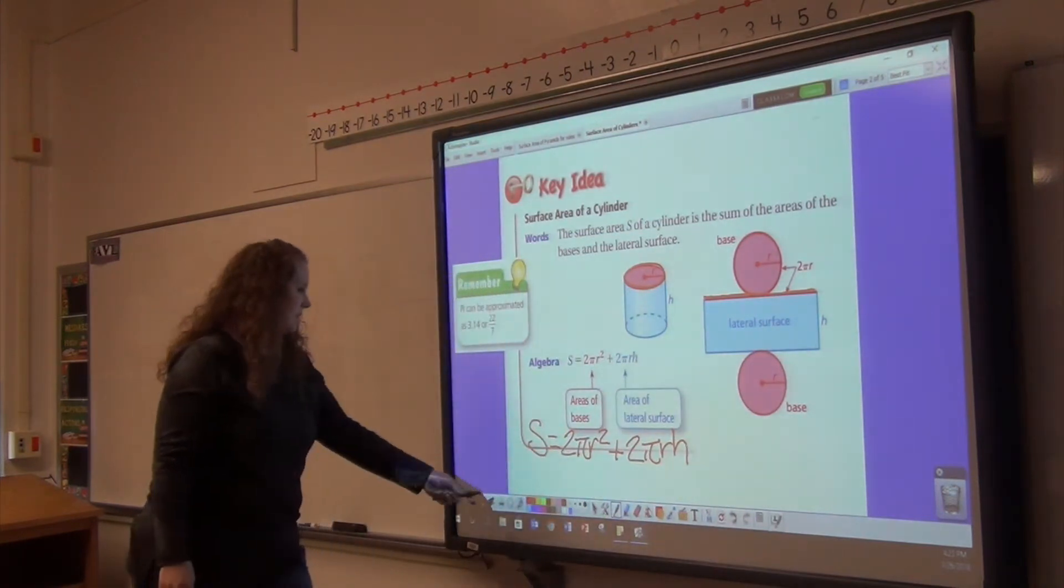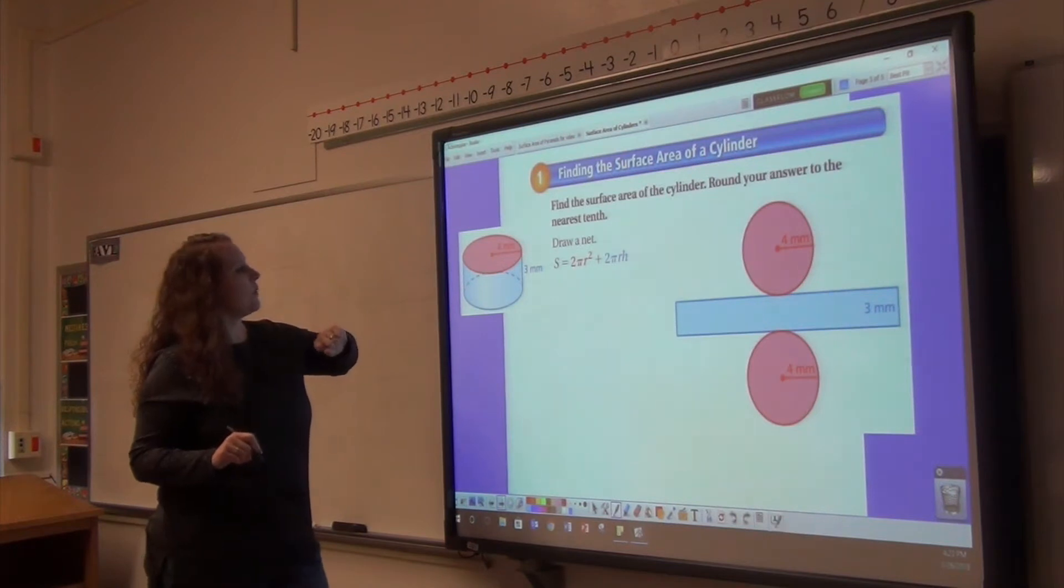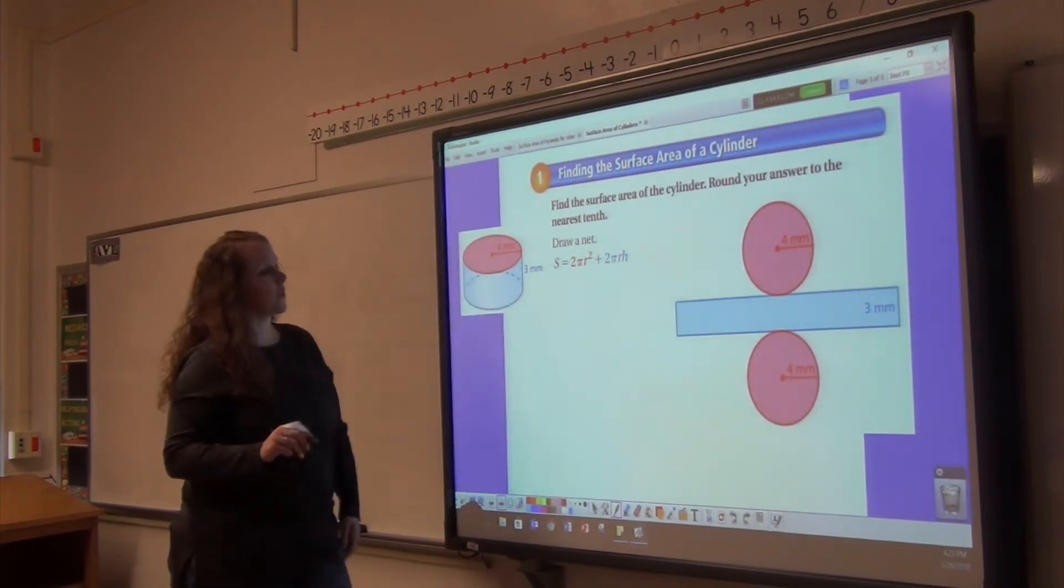Let's try to solve some of these. All right, so we have a radius of 4 and a height of 3.